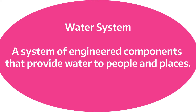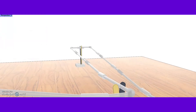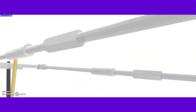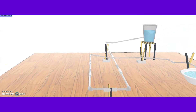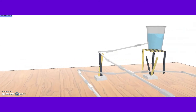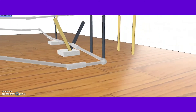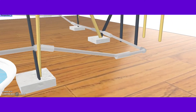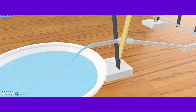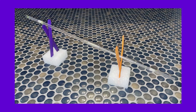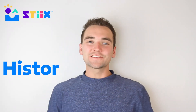If you're looking for a technical definition, a water system is a system of engineered components that provide water to people and places. We do a separate project where we focus on filtering the water, but for this activity we can pretend it's already clean and it's your job to distribute it to different houses around the city. Here are some pictures and examples so you know what you're getting yourself into.